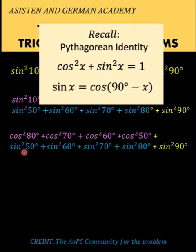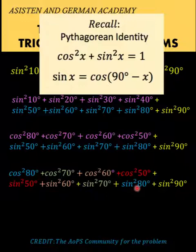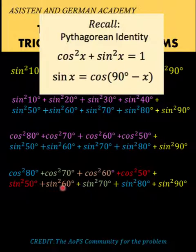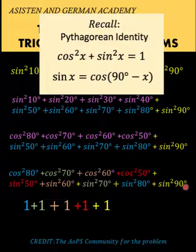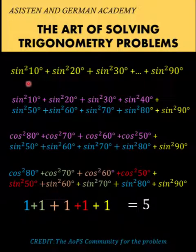We use color coding to show which terms add up to one: the blue terms equal one, the green terms equal one, the orange terms equal one, and the red terms also add up to one. The remaining function, sine squared 90 degrees, is also equal to one.